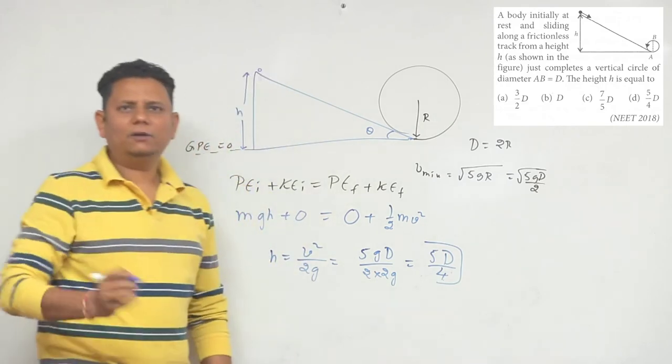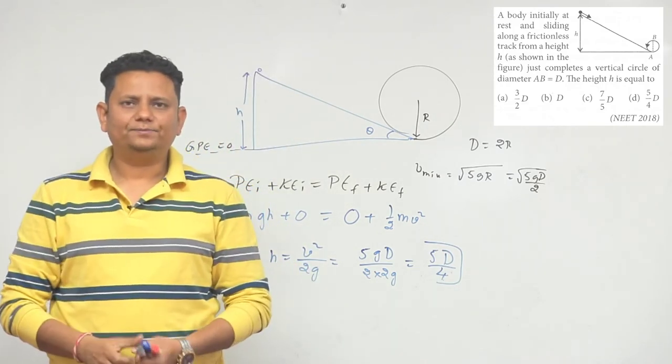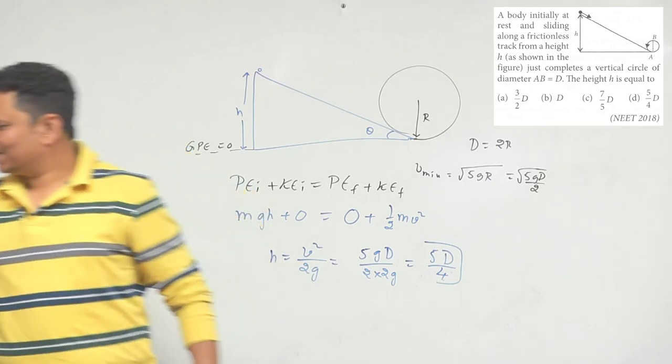So the answer is 5D by 4, which is our final value. Option D is the correct answer. Thank you.